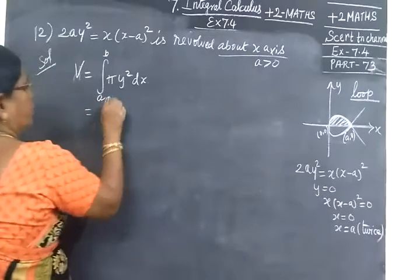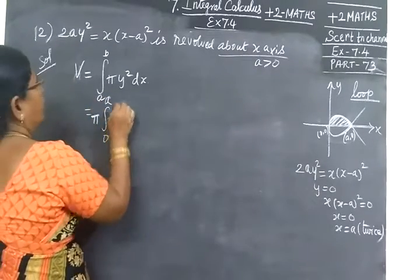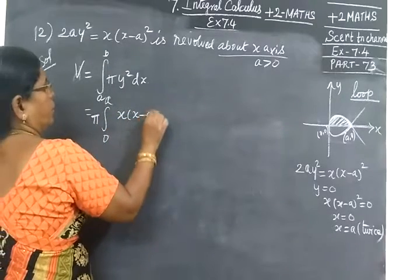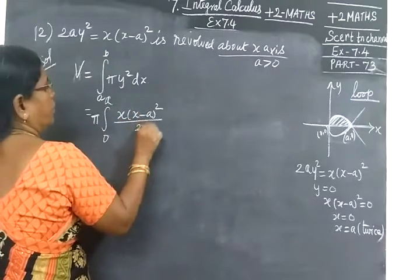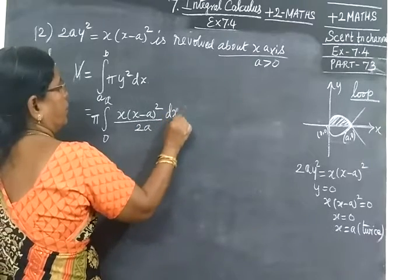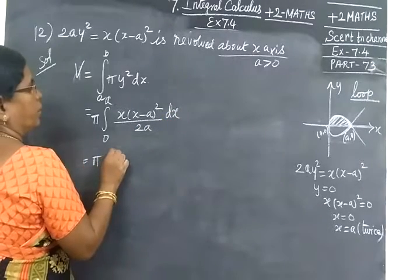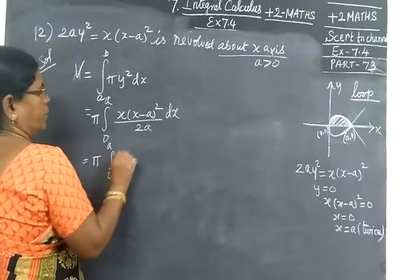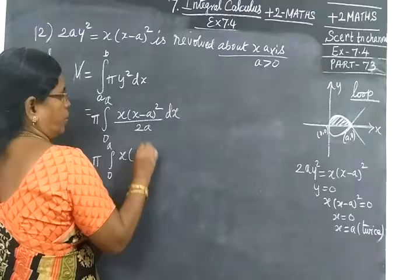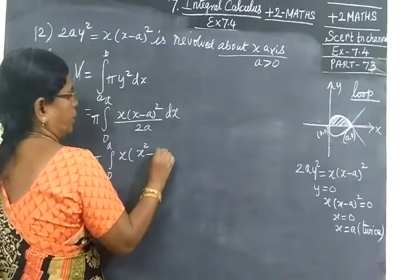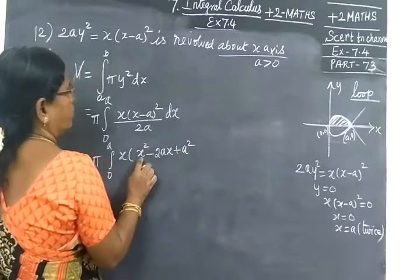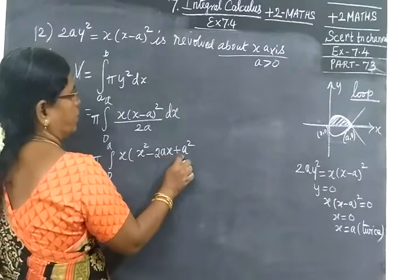So 0 to A, π you take outside. Y² = x bracket (x-A)² by 2A, dx. Equal to π. Now you expand it. Integrate 0 to A, x bracket x² minus 2A·x plus A², by 2A.